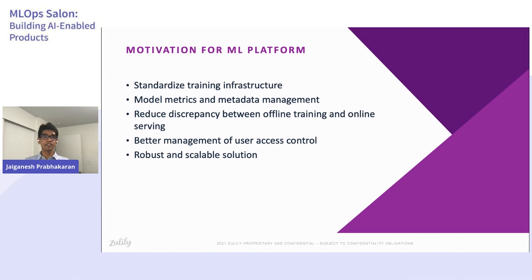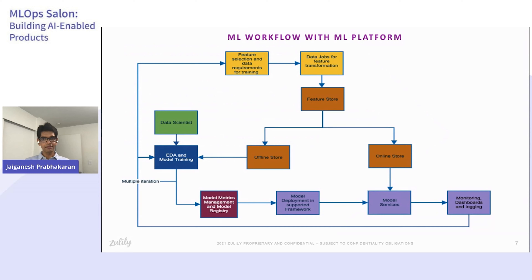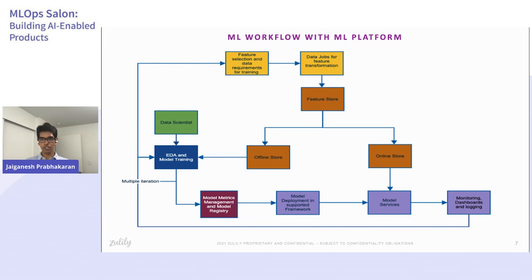Those were some of the reasons behind building the machine learning platform. Now let us take a look at how the ML workflow will look with a machine learning platform. A data scientist working on model building will go through multiple iterations of feature engineering, feature selection, and hyperparameter tuning. Having a model metrics management and metadata tool will allow them to keep track of their experiment runs — logging hyperparameter choices, saving models, feature names, model metrics, and so on. While building this model, data scientists can use features they have already used in production from our offline feature store or build new features.